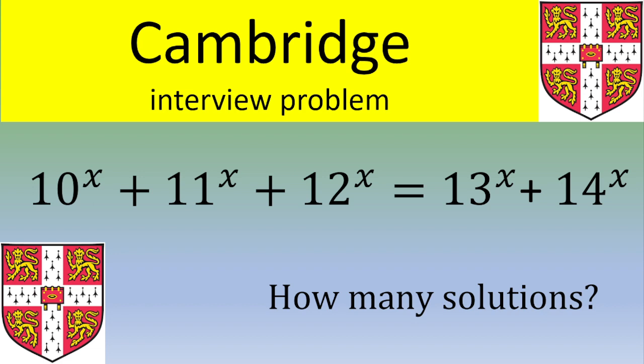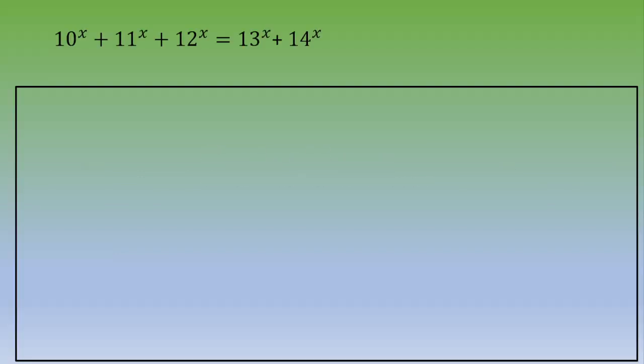One way to solve this equation is to divide all these terms by one of the five terms. It's always nice to take this term in the middle, so let's divide everything by 12^x.